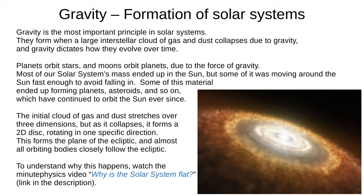The cloud of gas and dust that forms the solar system starts out stretching over three dimensions, but as it collapses it forms a two-dimensional disk rotating in one specific direction. This forms the ecliptic, and most orbiting bodies closely follow this plane of the ecliptic. If you'd like to understand why this happens, see the Minute Physics video 'Why is the solar system flat?' linked in the video description.